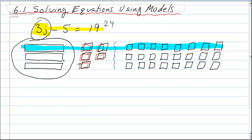So one of these j's equals one, two, three, four, five, six, seven, eight. So we can simply write j equals eight, and that's how you use algebra tiles to solve equations.